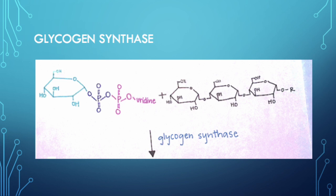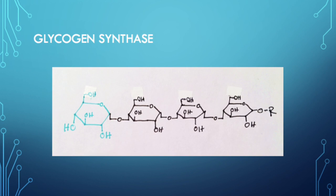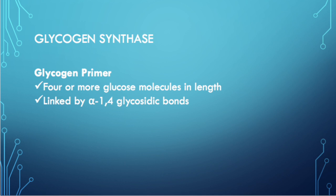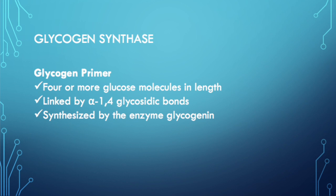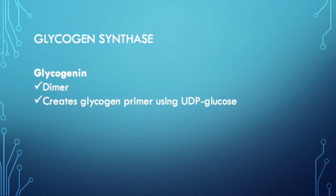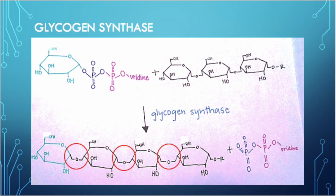We add glucose to the glycogen chain using an enzyme known as glycogen synthase, which synthesizes an alpha-1,4 glycosidic bond that attaches the glucose to the chain. Glycogen synthase cannot act by itself — it needs the help of a primer that is four or more glucose molecules long. This glycogen primer is a short chain of glucose residues linked by alpha-1,4 glycosidic bonds and is created by an enzyme known as glycogenin, a dimer that uses the UDP-glucose just formed. Glycogen synthase can only catalyze alpha-1,4 glycosidic linkages.